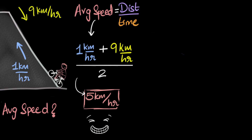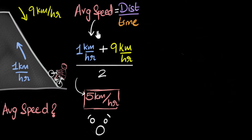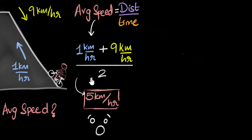But guess what? This is wrong. Why is this wrong? I understand that I'm not using the formula, but this is how we do it in maths, right? So why can't I do it this way? I think it would be a good idea to first spend a couple of minutes to understand why this method is wrong so that we don't make mistakes like this in the future, and then look at what the right way to do this is.